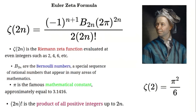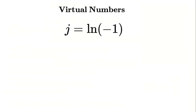But what if we could reinterpret this formula using a new kind of number? That's where virtual numbers come in. Now let's introduce virtual numbers. In this system, we define a new number j, where j equals the natural logarithm of negative 1. In standard mathematics, the natural logarithm of a negative number isn't defined, but in this virtual system, we're extending the rules to allow it.